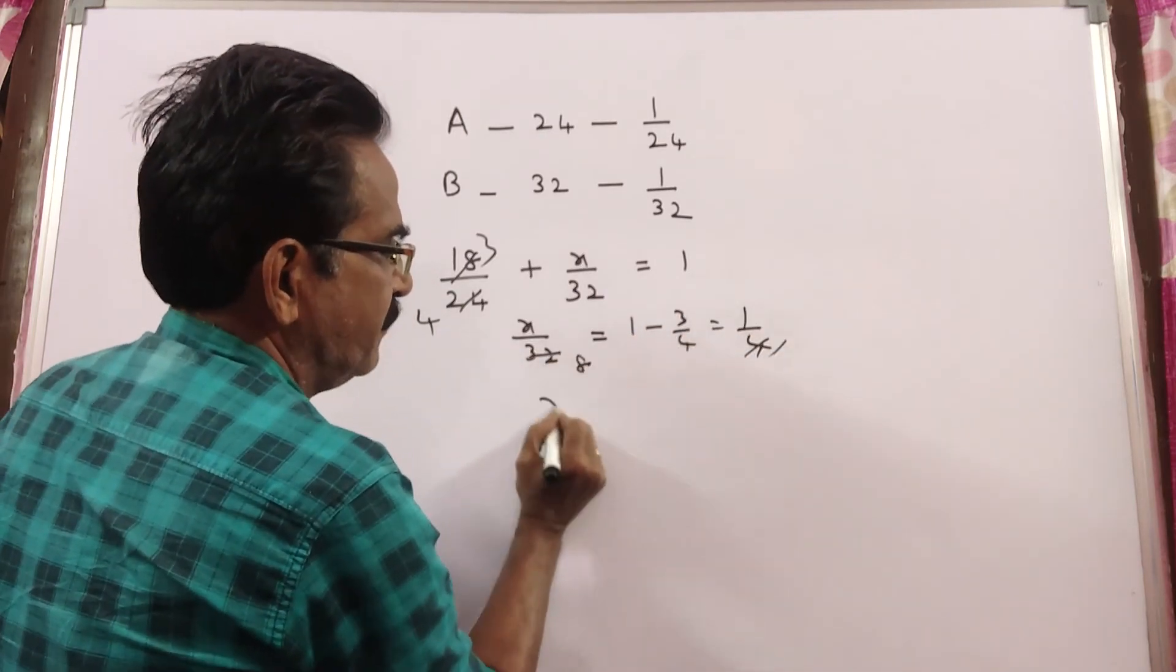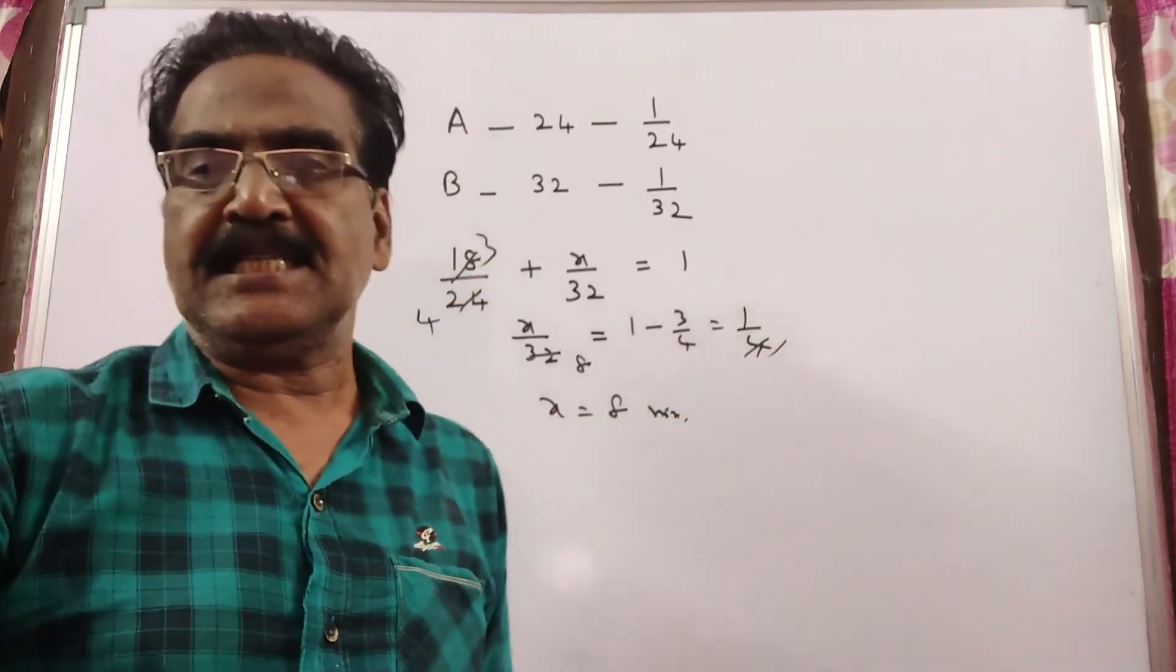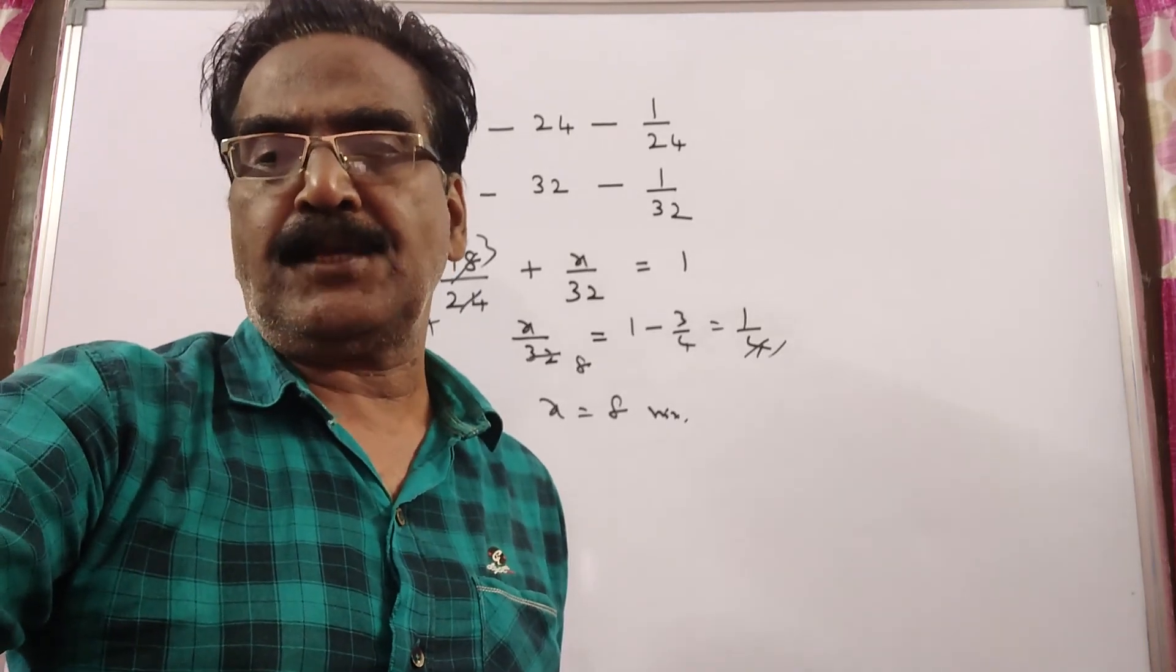For 1's, for 8's, X is equal to 8 minutes. So, after 8 minutes, pipe B should be stopped. Thank you.